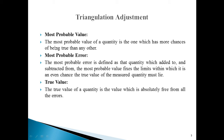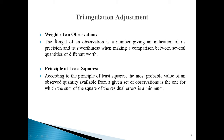The most probable value of a quantity is the one which has more chances of being true than any other. The most probable error is defined as that quantity which, when added to and subtracted from the most probable value, fixes the limits within which there is an even chance that the true value of the measured quantity must lie. The true value of a quantity is the value which is absolutely free from all kinds of errors. The weight of an observation is a number giving an indication of its precision, trustworthiness, and importance when comparing several available quantities.